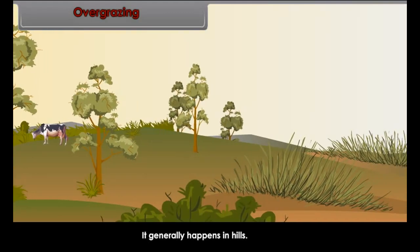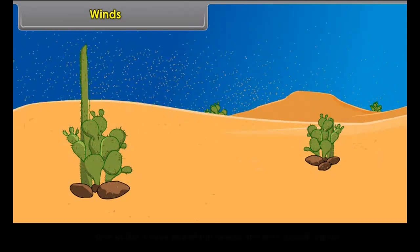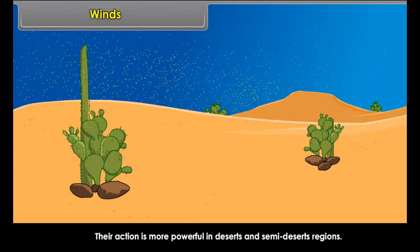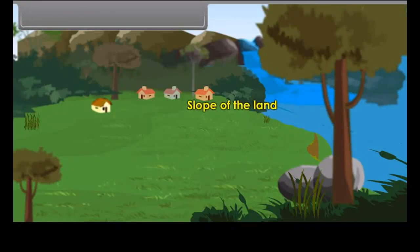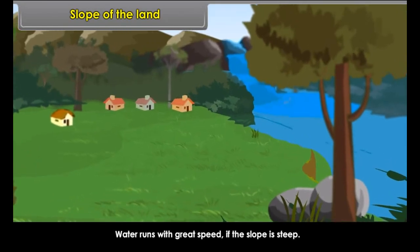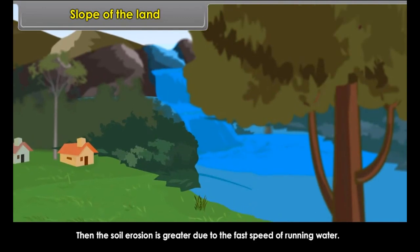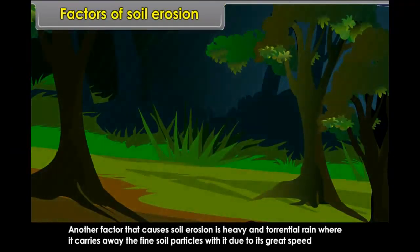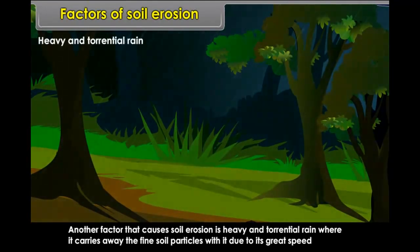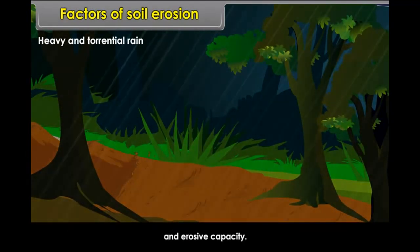Overgrazing, especially by cows, goats and sheep, erodes soil as plants which conserve soil are uprooted — it generally happens in hills. When winds blow violently, they carry away several millions of tons of soil dust; their action is more powerful in deserts and semi-desert regions. Regarding slope of the land: water runs with great speed if the slope is steep, making soil erosion greater due to the fast speed of running water.